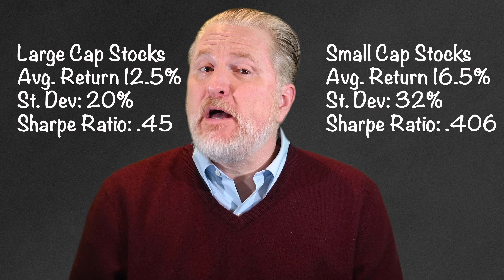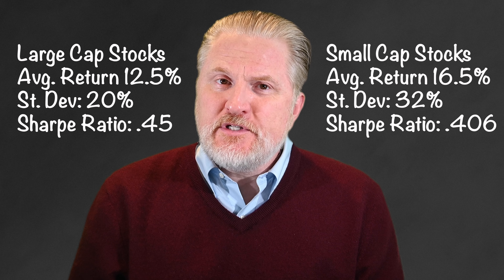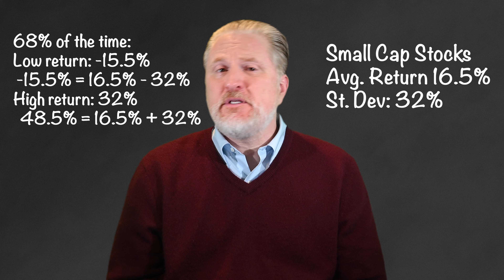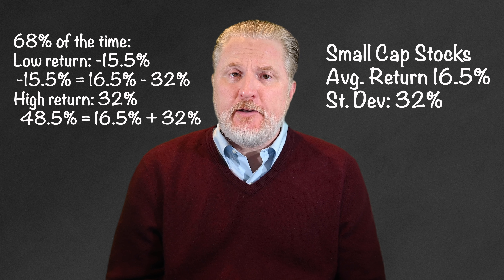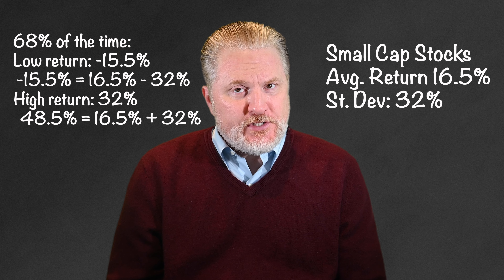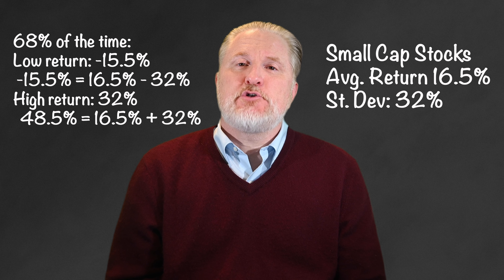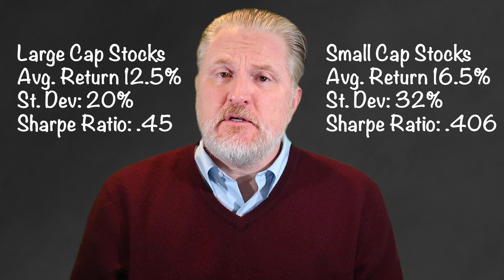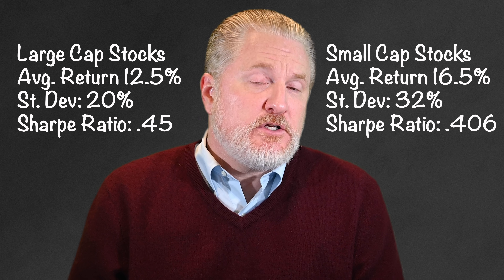Let's contrast that with small cap stocks, where the average annual return since 1926 has been 16.5%, but where the standard deviation is a whopping 32%, converting into a Sharpe Ratio of 0.406. At 16.5%, the returns are significantly better than large cap U.S. stocks, but the 32% standard deviation really hurts their numbers. As such, a reasonable range for small cap stock returns would be 16.5% plus or minus 32% — about two-thirds of the time, or 68% of the time, small cap stocks should return between a 15.5% loss and a 48.5% gain. So on a risk-adjusted basis, the large cap stock portfolio is the best, historically speaking.